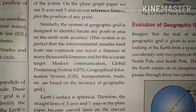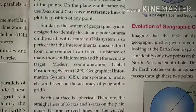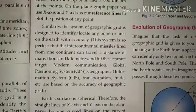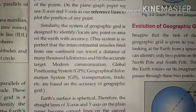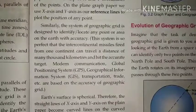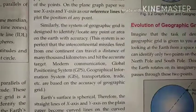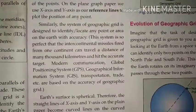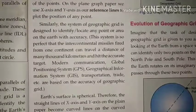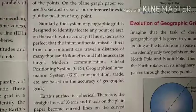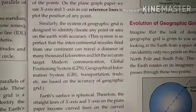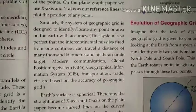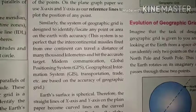This system is so accurate that intercontinental missiles, once fired, can travel several thousand kilometers and hit only the targeted region. This is possible because of the geographic grid. Modern communication systems like GPS — Global Positioning System — and GIS — Geographical Information System — as well as transportation and trade, are all based on the accuracy of geographic grid. GPS makes it easy to locate a vehicle or place.